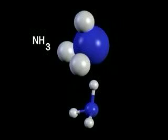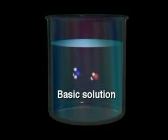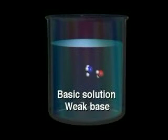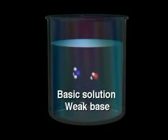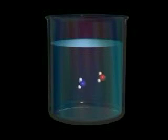Ammonia does not contain the hydroxide ion, but is basic in water. When gaseous ammonia dissolves in water, it reacts with water to form the ammonium and hydroxide ions. However, ammonia is a weak base. The equilibrium forming the hydroxide and ammonium ions lies largely to the left. At any given time, most of the ammonia is in a non-ionized form.